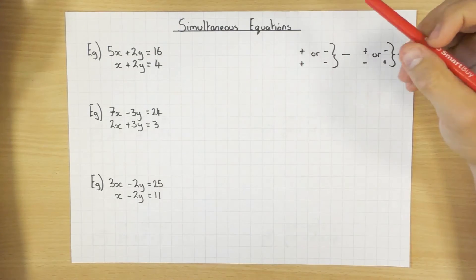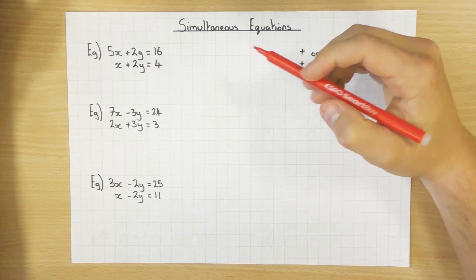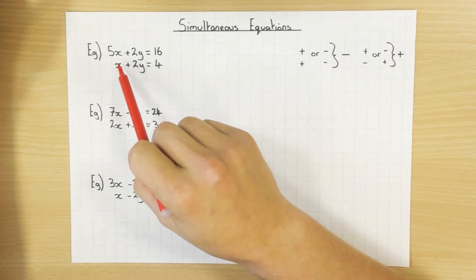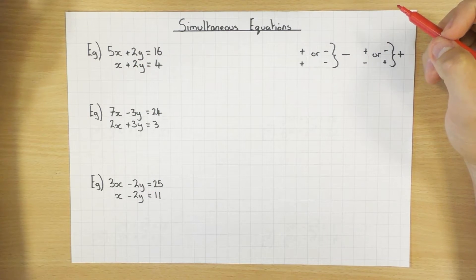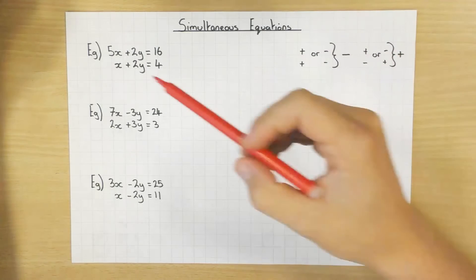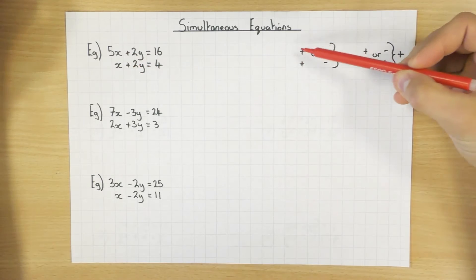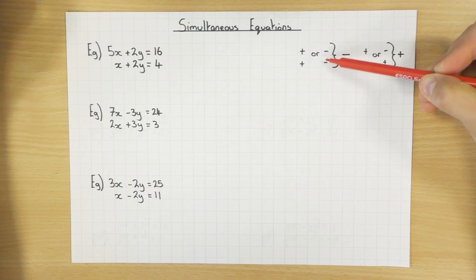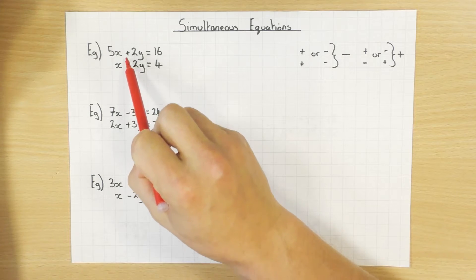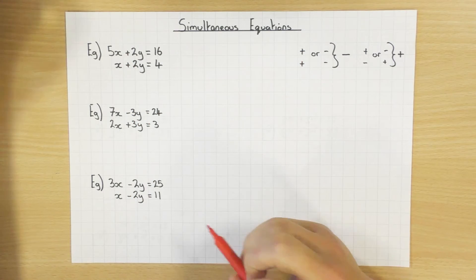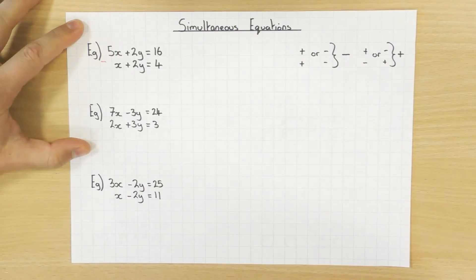To do that, I've got two choices: I can add these two equations or I can take them away. The idea is to eliminate one of the variables — either eliminate the x's or eliminate the y's. A little rule to help you choose: if you've got two pluses like this, same signs means we take away. If they're different, we add the equations. In this case, because I've got two pluses, I'm going to take the two away.